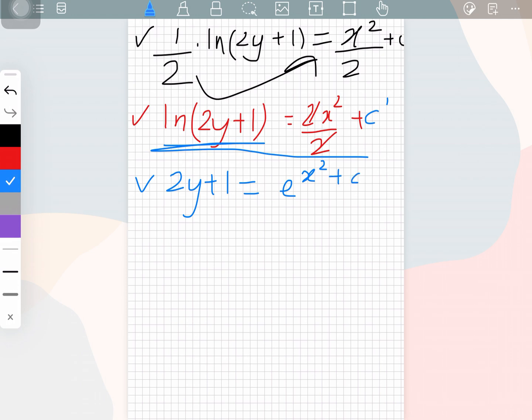So again, now what we can do is we can send this one to the other side. That way, what we will have is 2y is equal to e to the power x square plus c minus 1.